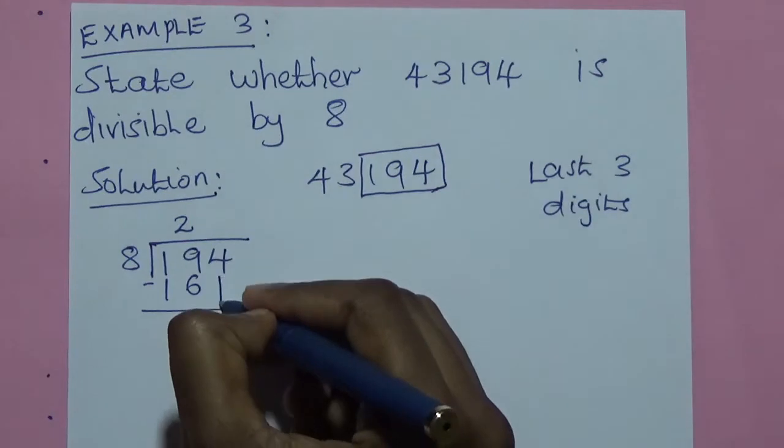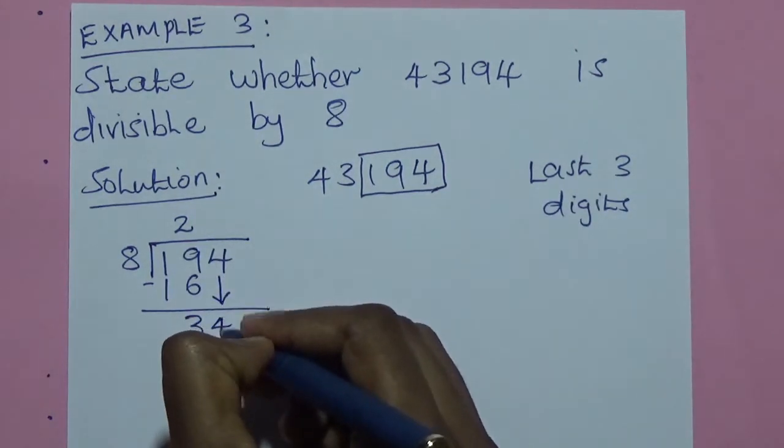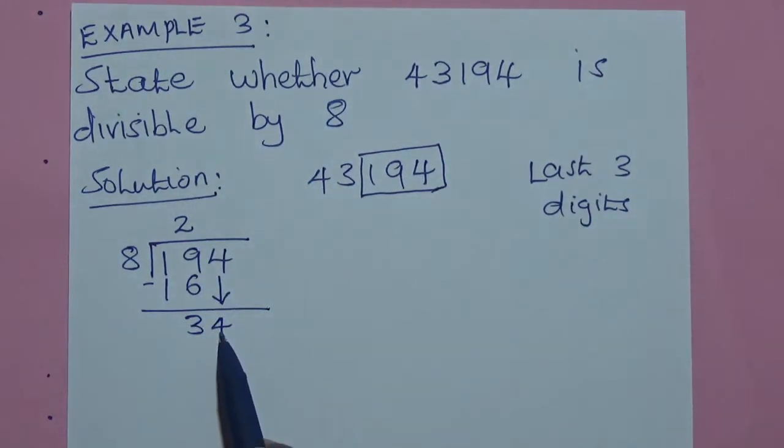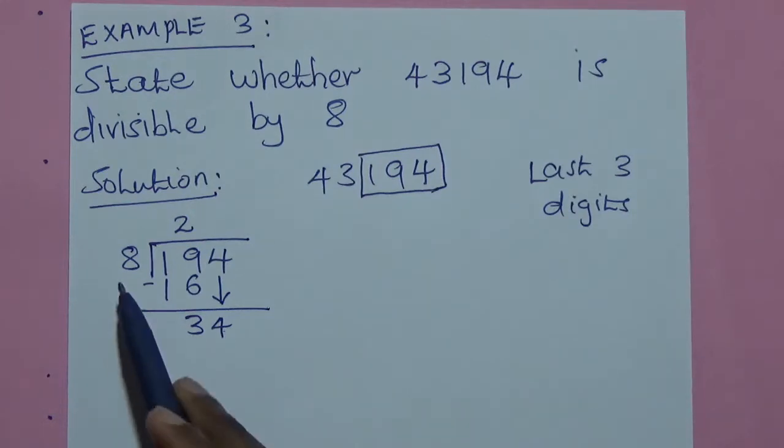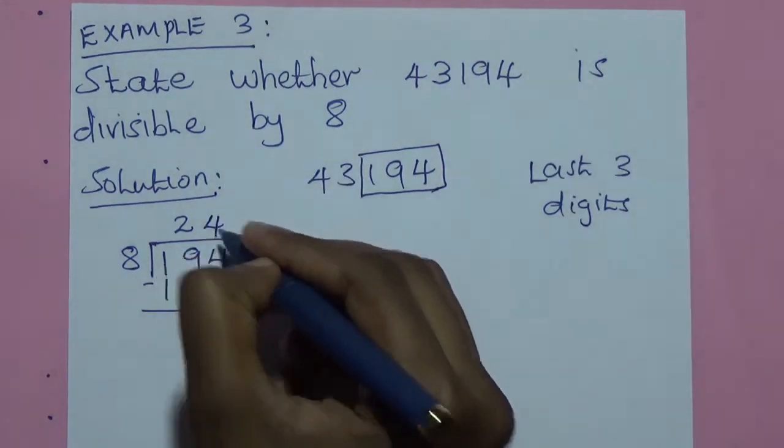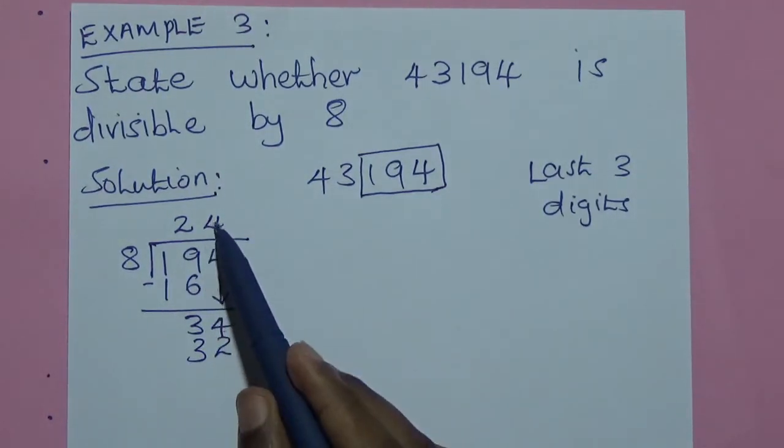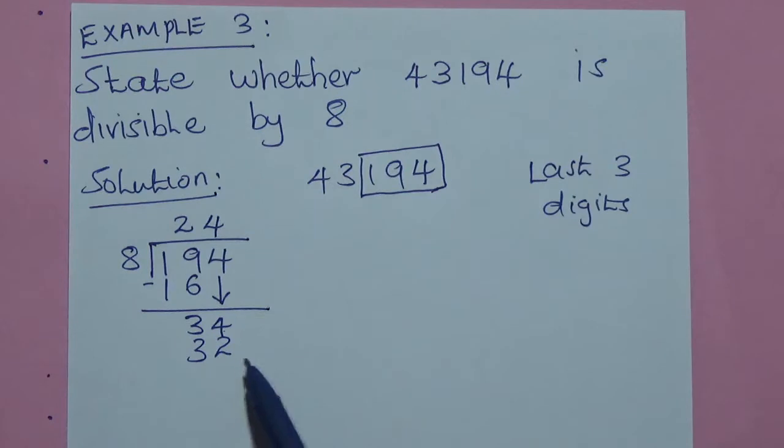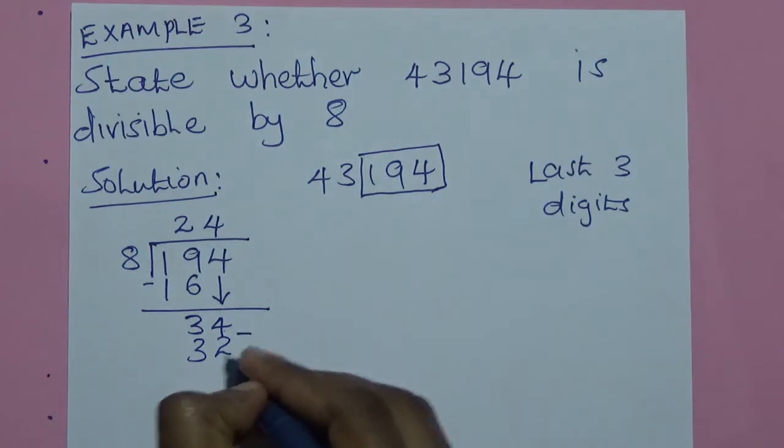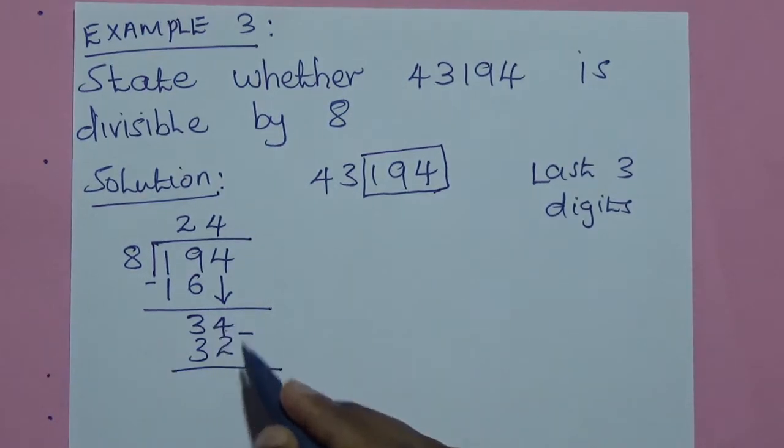So, we bring down the 4. We have 34. 34 divided by 8 will be 4 because of 32. Because 4 times 8 will give you 32. We subtract. 34 minus 32, we have a remainder of 2.